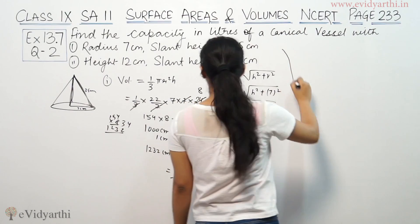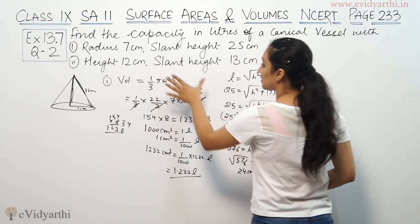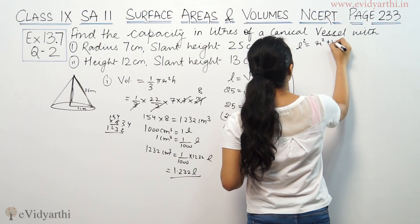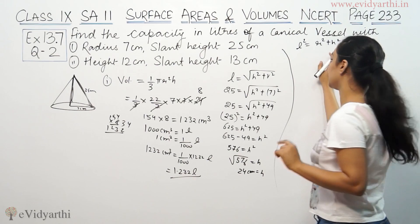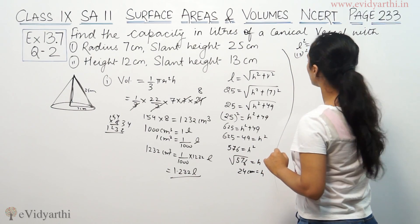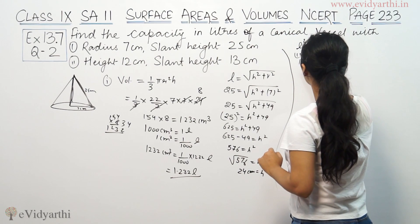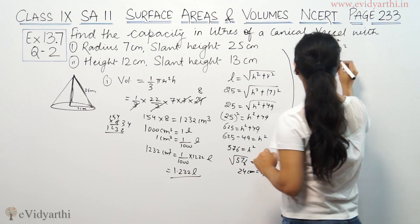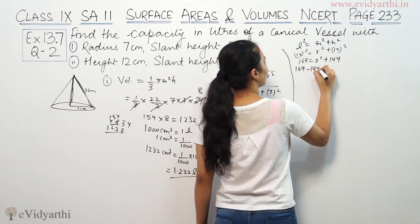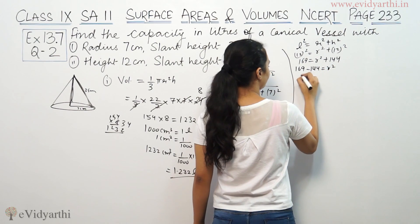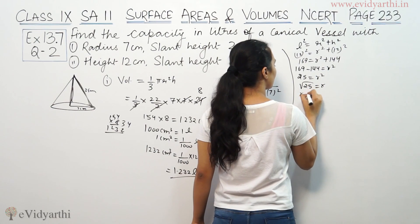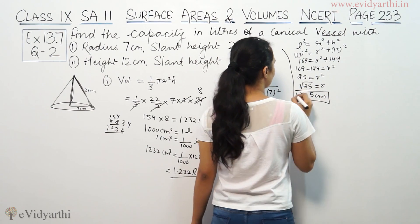In the second case, we have height and slant height given. So we need to find the radius. Using l² = r² + h²: l is 13, h is 12. So 13² = r² + 12², giving 169 = r² + 144. Therefore r² = 169 − 144 = 25, so radius equals 5 centimeters.